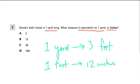So the logic here is: every foot makes 12 inches, and we have three feet because we have one yard. So if we have three feet, and every foot has 12 inches, how many inches are there altogether?